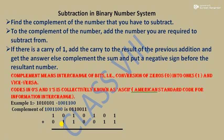Next: Subtraction in Binary Number System using the complement method. First we need to know the complement of a number: the complement of 1 is 0, and the complement of 0 is 1. Steps: find the complement of the number to be subtracted, add it to the number you are subtracting from. If there is a carry of 1, add that carry to the result. Else, complement the sum and put a negative sign before it.